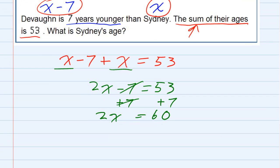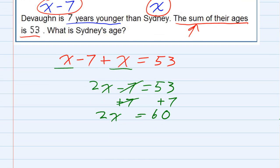And then lastly, to solve this for x, I divide both sides by 2. The 2's cancel and I get x equals 30.